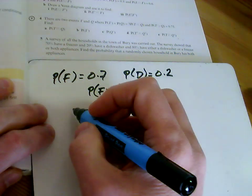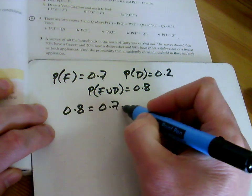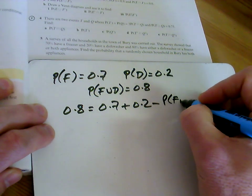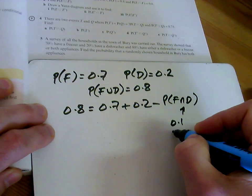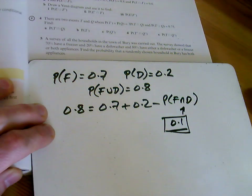We can use our good old formula again. So it's 0.8 equals 0.7 plus 0.2 minus the intersection. So that intersection there is going to be 0.1. The probability of having both is 0.1. Finished.